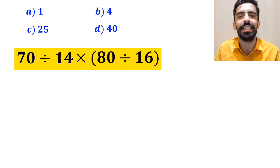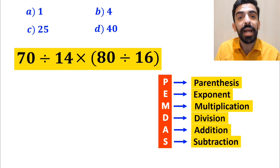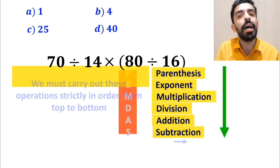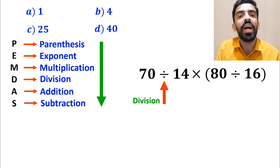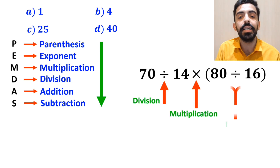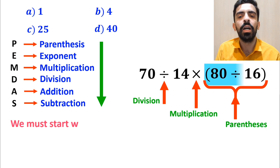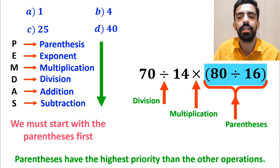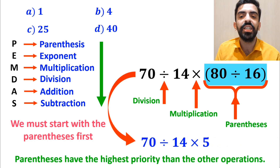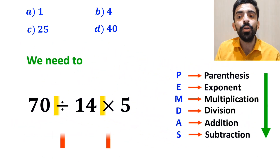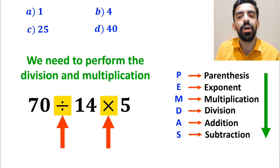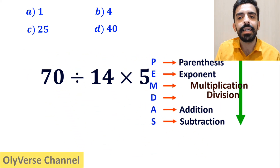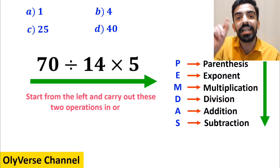Let me show you how to solve this expression properly. To solve this question we follow PEMDAS step by step, carrying out operations strictly in order. As you can see on the screen, this expression has a division sign, then a multiplication sign, and finally parentheses. According to PEMDAS, we start with the parentheses first, giving us 70 divided by 14 multiplied by 5. It's very important to keep in mind that multiplication and division are on the same level of precedence, so the best approach is to start from the left and carry out these two operations in order.